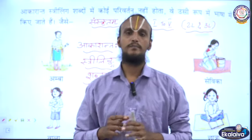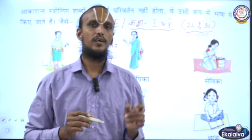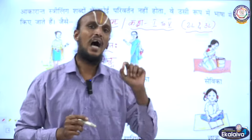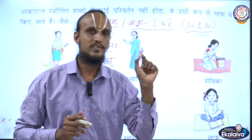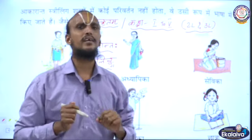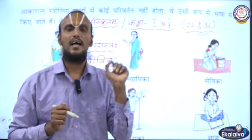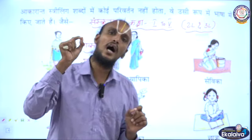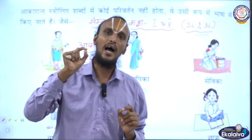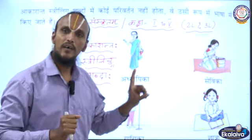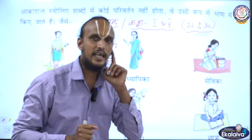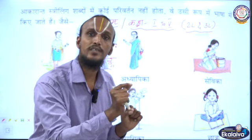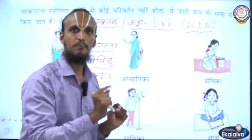Shri Gurubhyo Namaha. Good morning, my dear children. Today I am going to teach you Strilinga Shabdaha, Aakarantaha. Aakarantaha means words ending with the 'A' sound. First I will read the words — listen carefully, children. Then I will teach you how to split the words into letters.